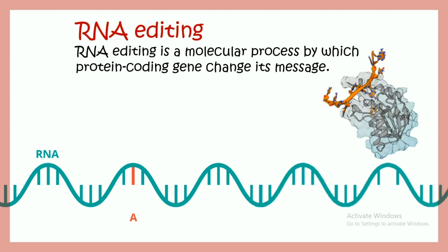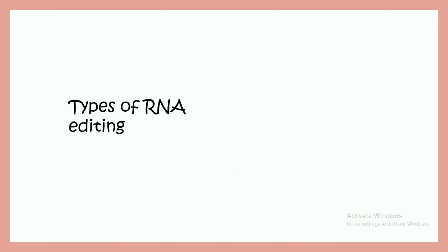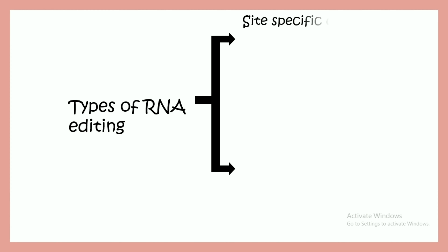RNA editing is a process by which a protein-coding gene can change its message. In most cases, the mechanism by which RNA editing takes place is by addition or deletion of a single nucleotide. RNA editing can occur by site-specific deamination.